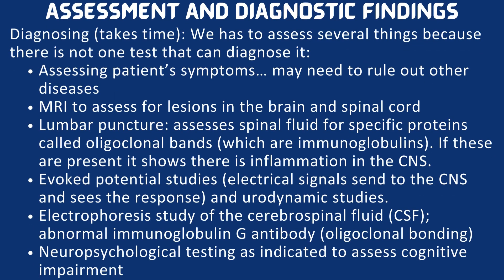Next are assessment and diagnostic findings. There is not one test that can diagnose MS, so several things must be assessed and other diseases must be ruled out. MRI is used to assess for lesions in the brain and spinal cord. Lumbar puncture assesses spinal fluid for specific proteins called oligoclonal bands, which are immunoglobulins — if present, this indicates inflammation in the CNS. Evoked potential studies send electrical signals to the CNS to see the response. Urodynamic studies and electrophoresis of cerebrospinal fluid are done to rule out abnormal immunoglobulin G antibody. Neuropsychological testing is used to assess cognitive impairment.